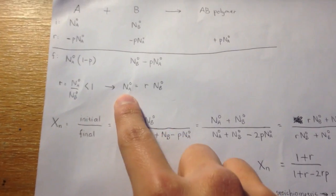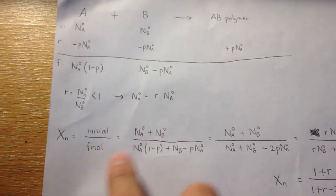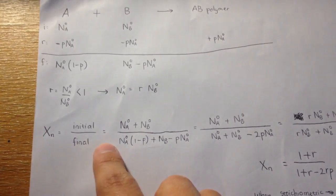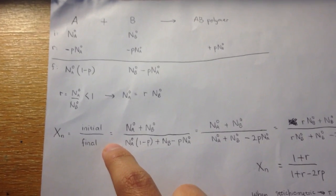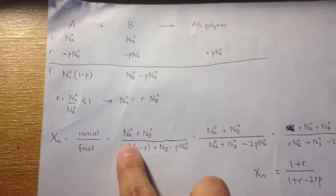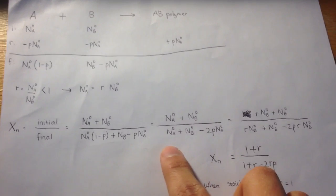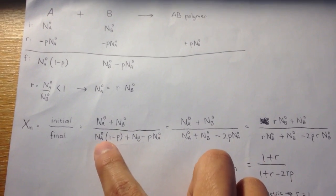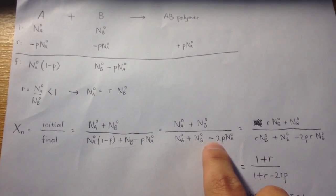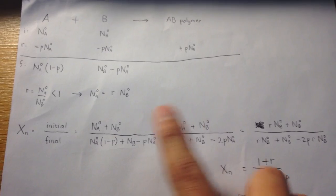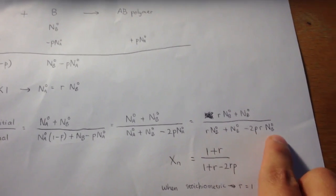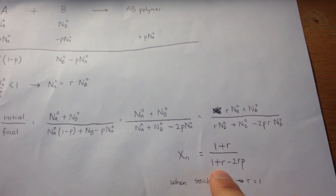So the final will be Na0 (1 minus P). And in B it will be Nb0 minus P Na0. I rearrange this into Na equals R Nb0. From the first definition, Xn equals initial over final, so it will be Na0 plus Nb0 over the final. And I expand this, Na (1 minus P) and rearrange it. So I got minus 2P Na here. I put this equation in here, and I just cancel all the Nb, so I got the equation from the lecture notes.